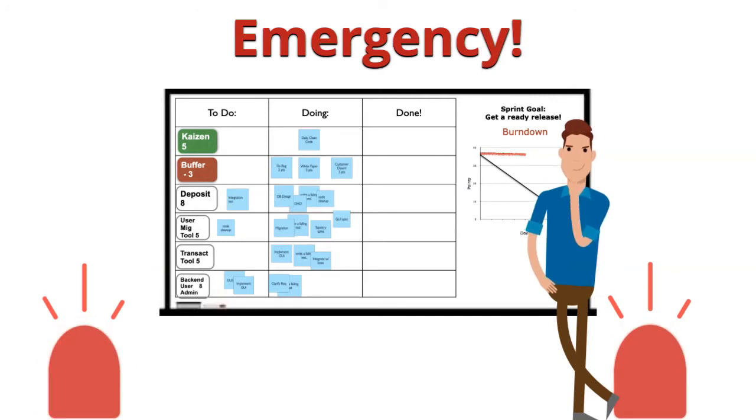If the burndown line is not tracking downwards by mid-sprint, the team needs to quickly implement the emergency procedure pattern. This is an ideal time for the Scrum Master to help the team to act early rather than the team drift towards sprint failure.